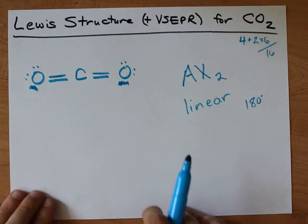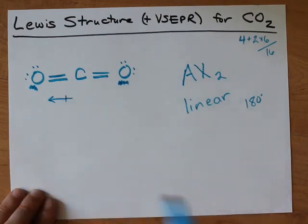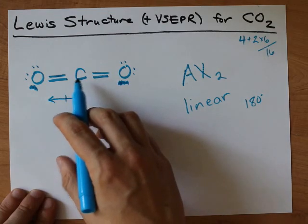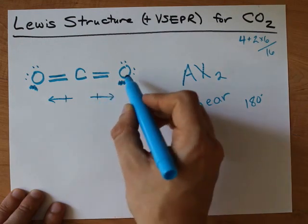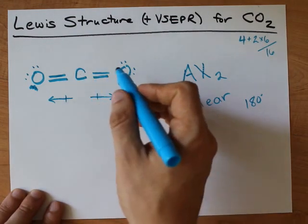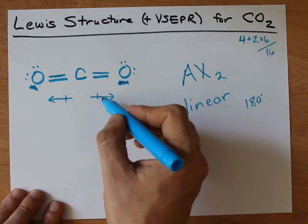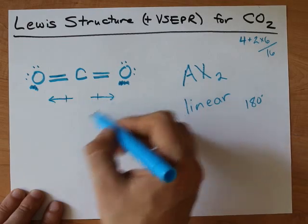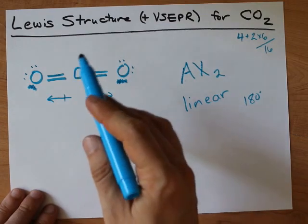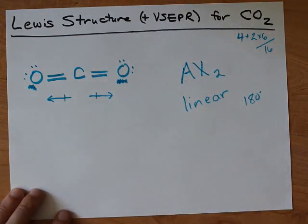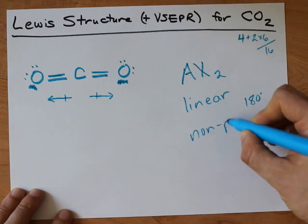The only other thing I'd like to point out here is that oxygen is more electronegative than carbon, so there is a dipole pulling this way from this carbon towards that oxygen. But there's also a dipole pulling this way from the carbon to that oxygen. And because they're both oxygen, they both pull equally, and these two dipoles cancel each other out. One's pulling to the right, one's pulling to the left, and they're pulling with equal strengths. It's like a tug of war, and they have an exact tie. Because of that, even though the bonds are polar, the molecule itself is non-polar.